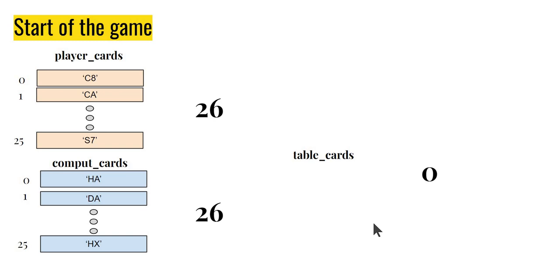The game starts with both players getting 26 cards from a shuffled lot. Notice the cards are shuffled, so we really don't know what order they're in. They're all mixed up. Basically, player has 26 cards, computer has 26 cards, and there's nothing on the table.